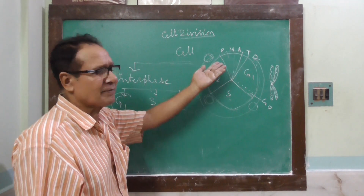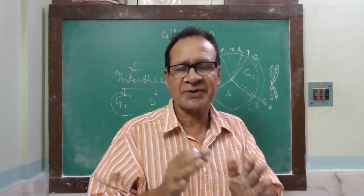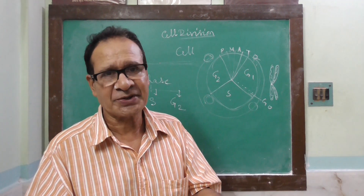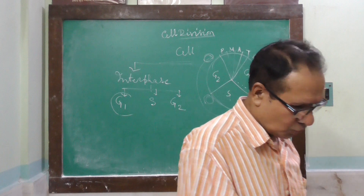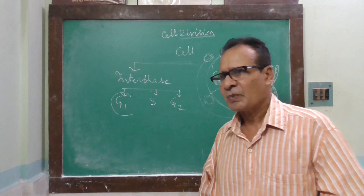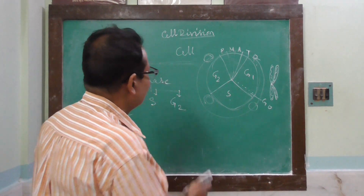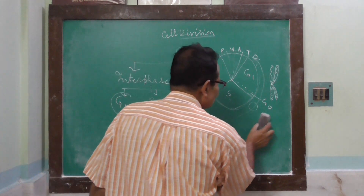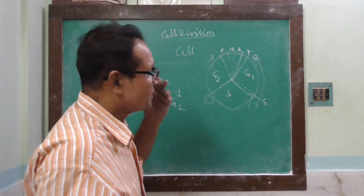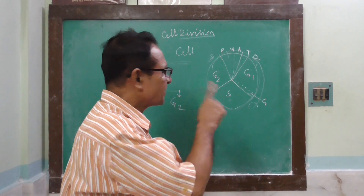Then the division phase begins. Through four successive phases, the nucleus divides into two daughter nuclei, and ultimately cytokinesis occurs, and two daughter cells are formed. In the cell cycle, there are also certain points known as checkpoints. Three checkpoints are present.